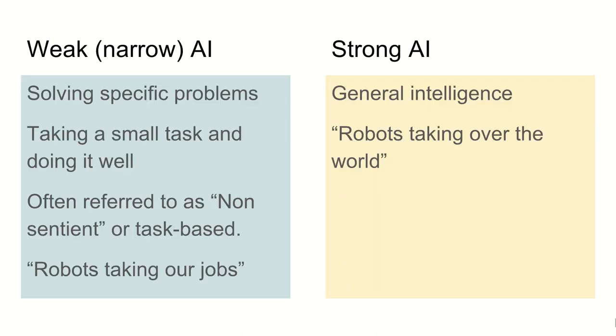And I think it's worth at this point taking a bit of a digression into definitions. Quite often what you'll hear when people talk about AI is the distinction between weak AI and strong AI, sometimes known as narrow AI and strong AI. Narrow AI is solving specific problems. It's taking a particular task and doing it well. Sometimes this is referred to as task based AI or non-sentient AI. And my strapline for this is that weak AI is robots taking our jobs. Strong AI is all about general intelligence and things that can handle all situations in the same way that we can. And my strapline for this is robots taking over the world.